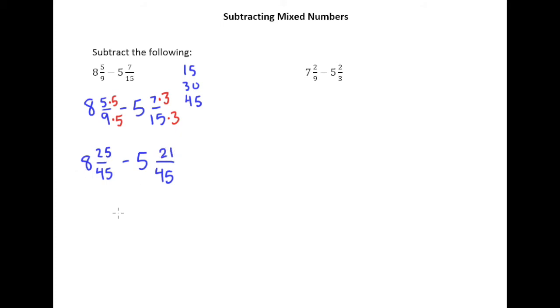So we end up with 8 and 25 forty-fifths minus 5 and 21 forty-fifths. Now it's as simple as 8 minus 5 is 3, 25 minus 21 is 4, and 4 and 45 have no common factors so that is our answer.